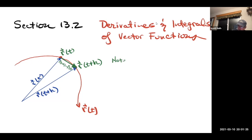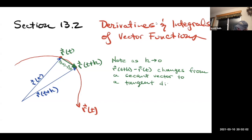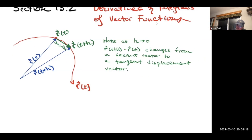Note: as h approaches zero, r of t plus h minus r of t changes from a secant to a tangent displacement vector. So it's really critical that we get this notion that it becomes tangent to the curve.